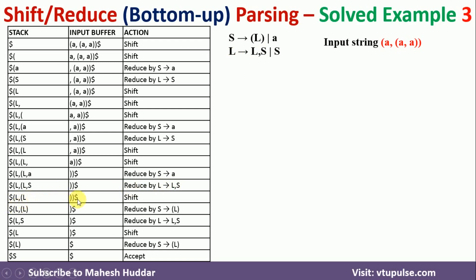We shift the next token, closing parenthesis. Now (L) is on the top of the stack, which can be reduced to S by the rule S → (L). Then L,S can be reduced to L. We shift the final closing parenthesis, and (L) is again reduced to S. The entire input has been consumed and we have S on top of the stack, meaning the input string is valid with respect to the given grammar.